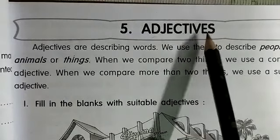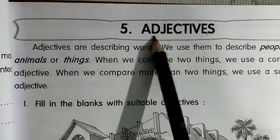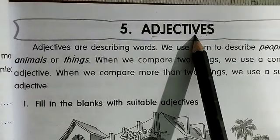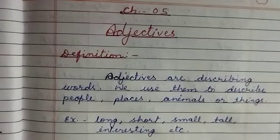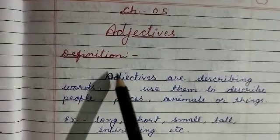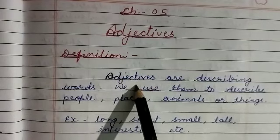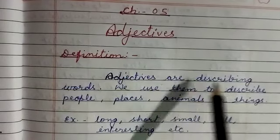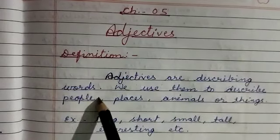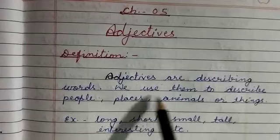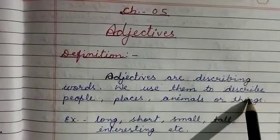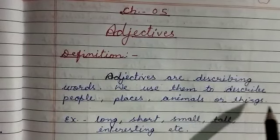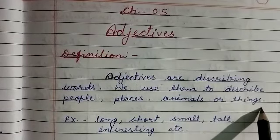First of all we should know what are adjectives. Adjectives are describing words. We use them to describe people, places, animals or things.